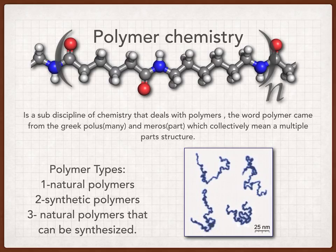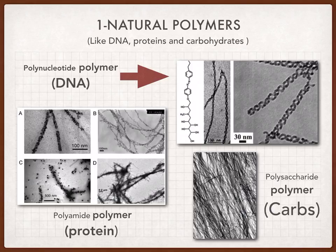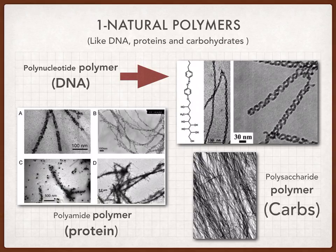Polymers are of three types: natural polymers, synthetic polymers, and natural polymers that can be synthesized. Natural polymers include many biological molecules like DNA, which is a polynucleotide polymer, polysaccharide polymers like carbohydrates shown in the lower right picture, and polyamide polymers — which are polymers composed of multiple amides — also known as proteins.